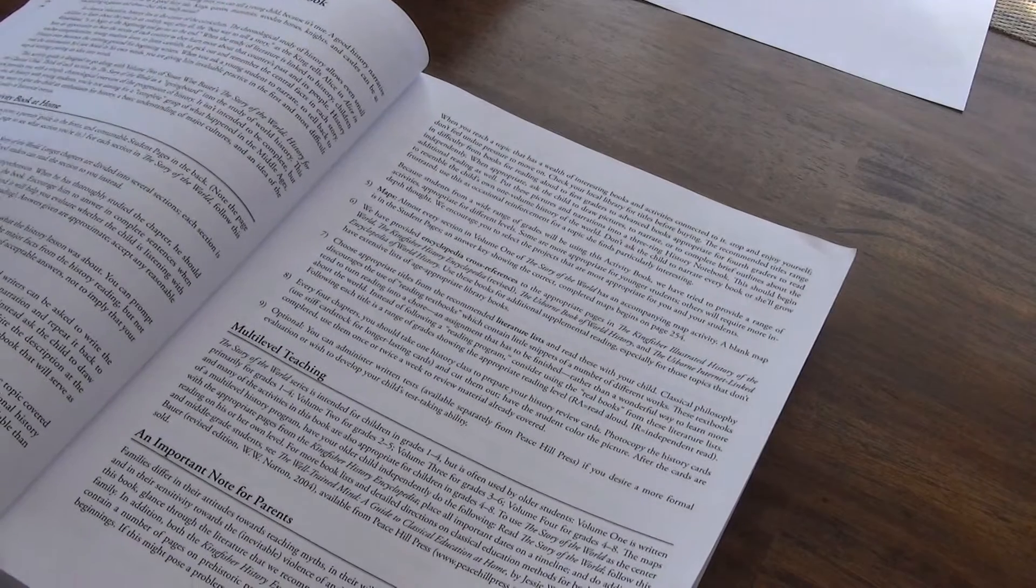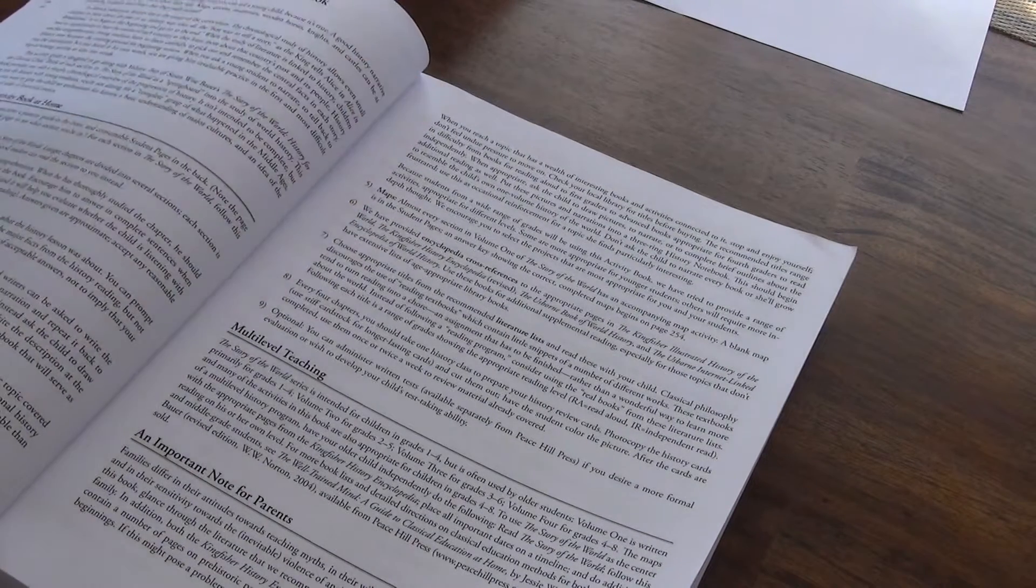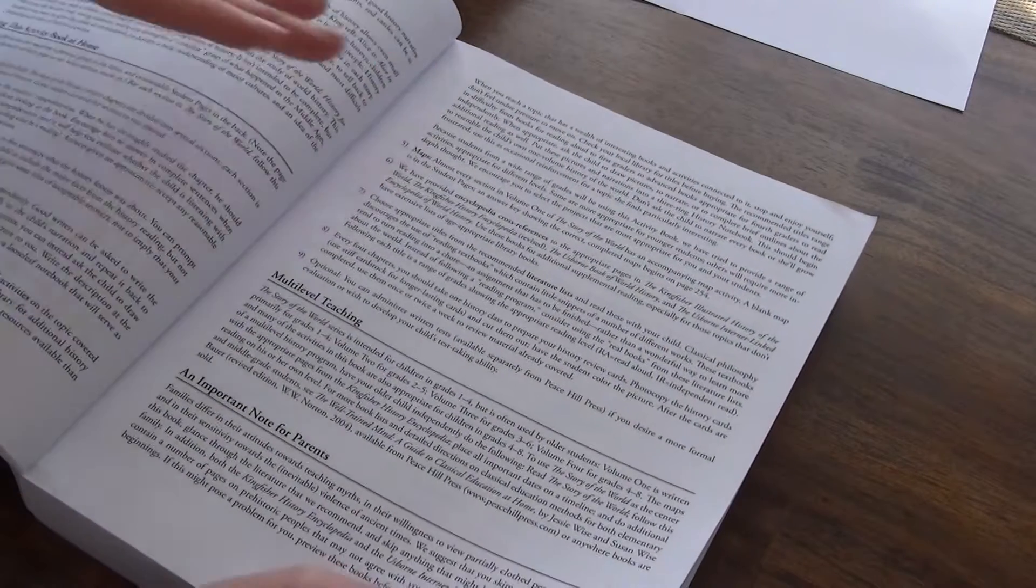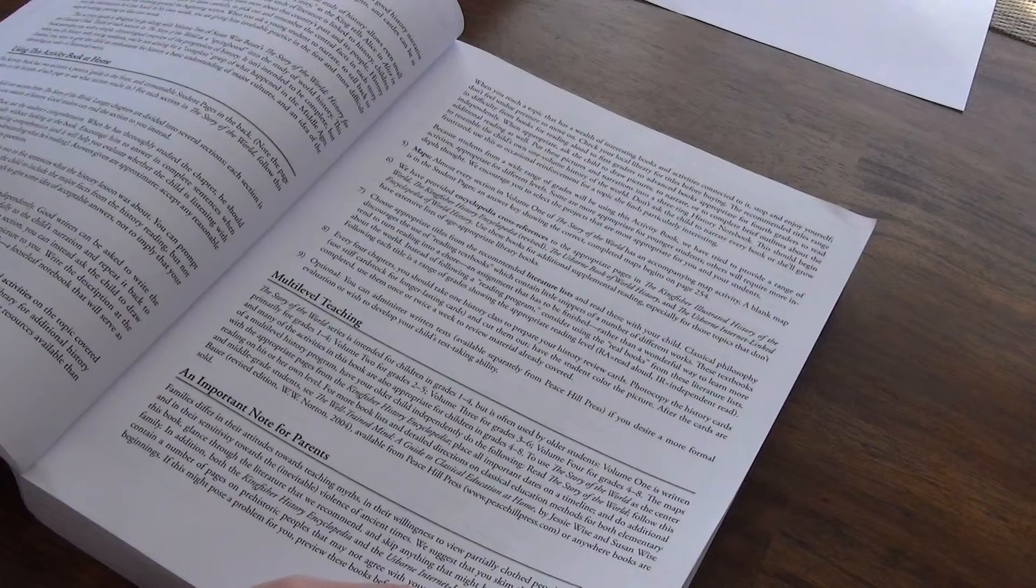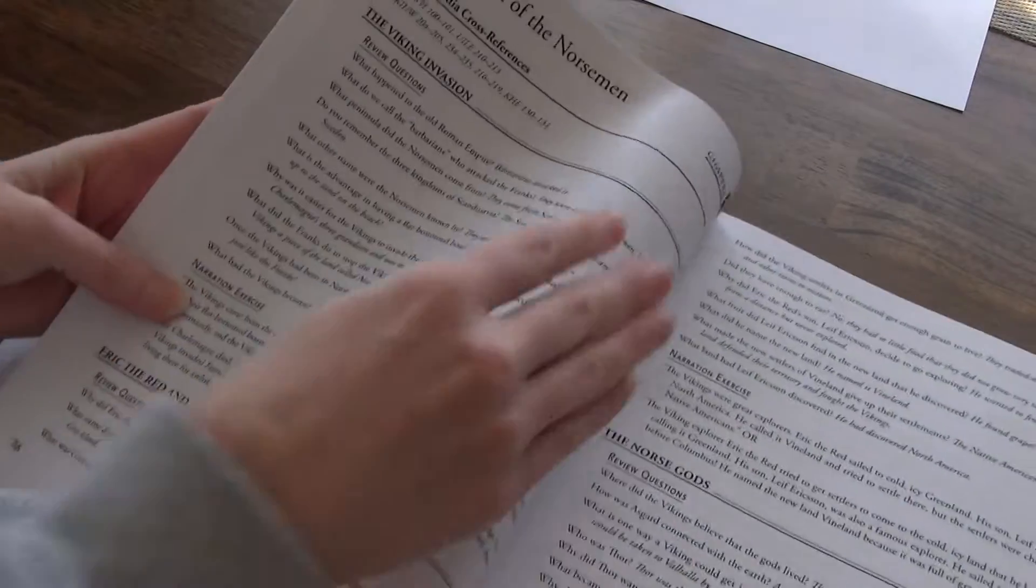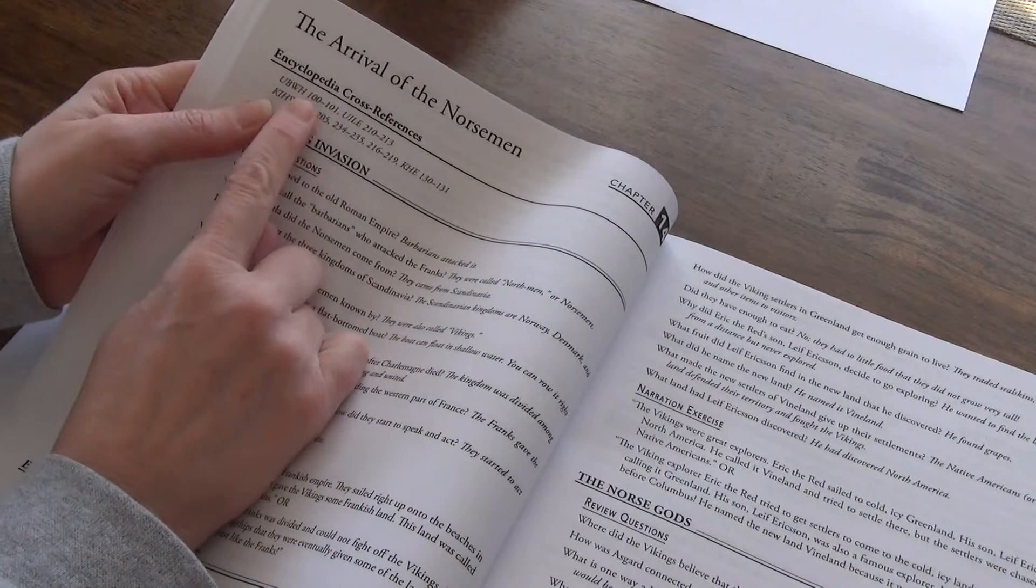And that is actually back, if we go back to how to use this, it says right here that we have provided Encyclopedia Cross References to the appropriate pages in the Kingfisher Illustrated History of the World, the Kingfisher History Encyclopedia Revised, the Usborne Book of World History, and the Usborne Internet-linked Encyclopedia of World History. You do not need all four of these. We only have one. We have the Usborne Internet-linked Encyclopedia of World History. It works fine. We don't need all of these other ones. There's also the Internet where you can also dive deeper if you want to. So that is what these are right here up at the top, referencing the page numbers.